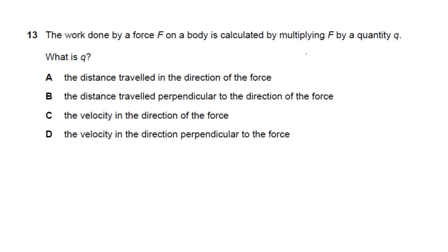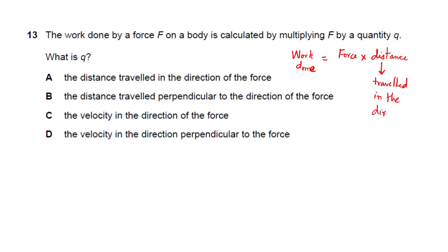Question 13: work done by a force equals force multiplied by quantity Q. Work done = force × distance traveled in the direction of force. Reading the options: 'distance traveled in the direction of force' — yes. 'Distance perpendicular to force' — no. 'Velocity in direction of force' — no. Answer: A (distance in the direction of force).